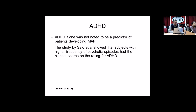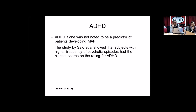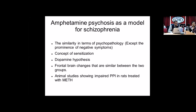Regarding ADHD, Salo et al. examined ADHD as a risk factor for developing methamphetamine-induced psychosis. Using the Bender-Utah Rating Scale, ADHD was not noted to be an independent predictor; however, both groups — those with and without psychosis — had significantly high levels of ADHD, and subjects who had higher frequency of psychotic episodes had the highest ADHD scores. This can give us a clue as to who may possibly develop psychosis. Amphetamine psychosis has also been proposed as a model for schizophrenia, given similarities in psychopathology, the concept of sensitization, the dopamine hypothesis, and animal studies showing impaired pre-pulse inhibition in rats treated with methamphetamine.